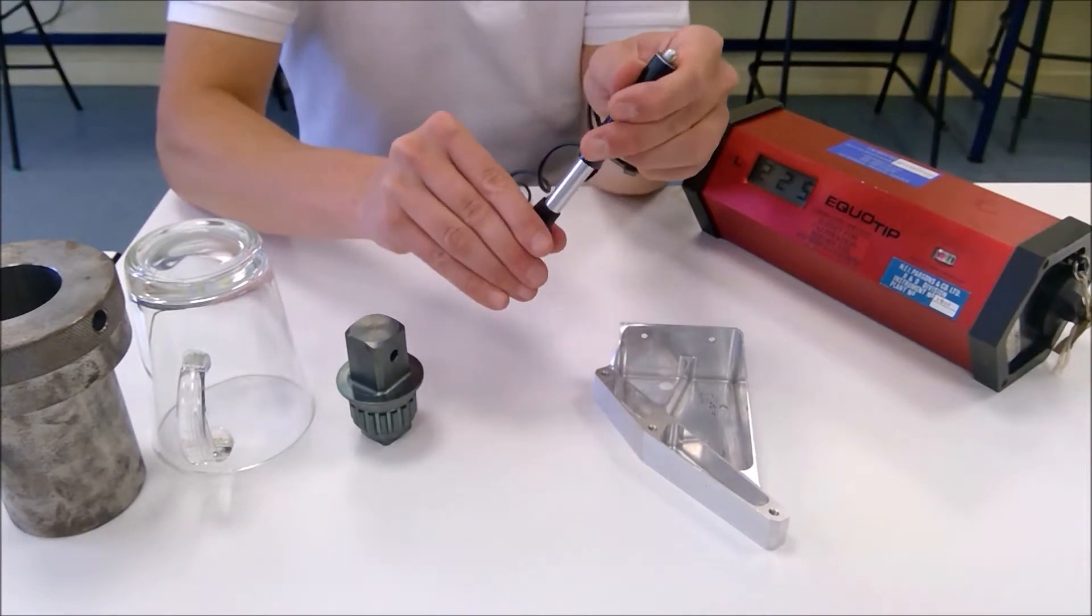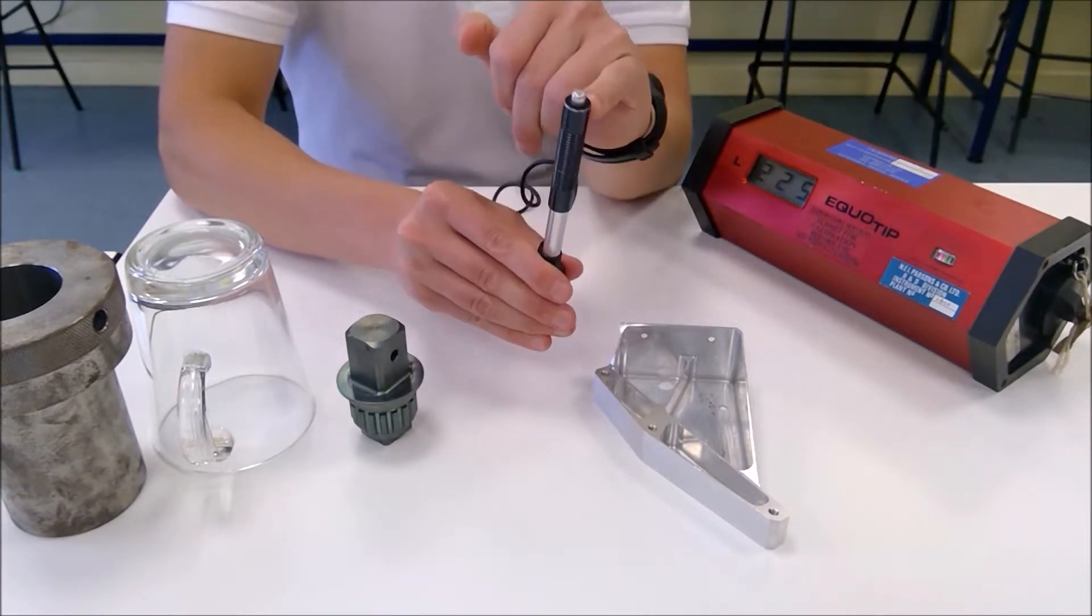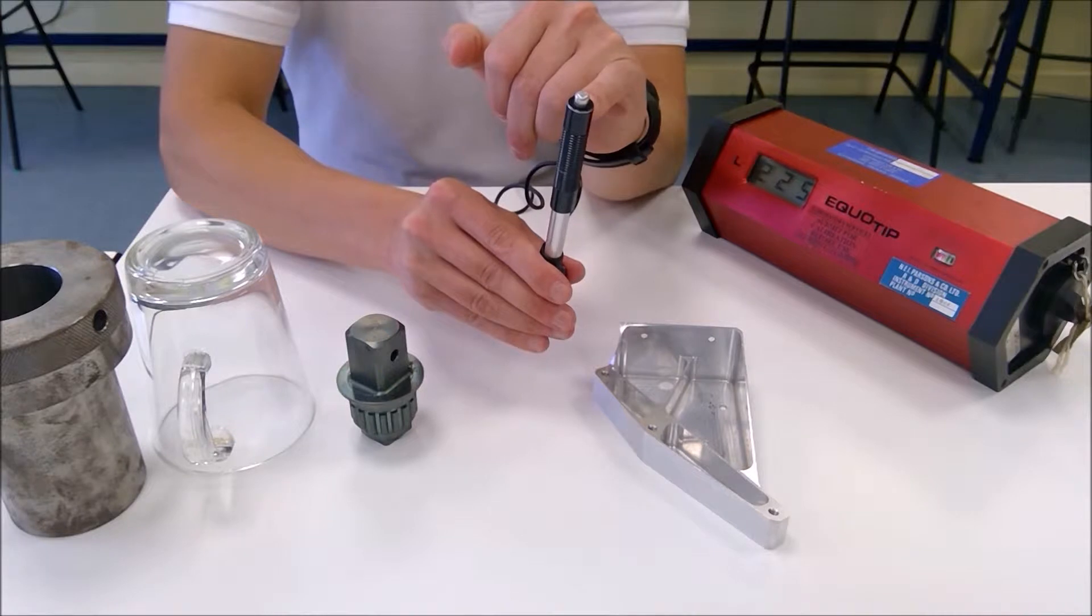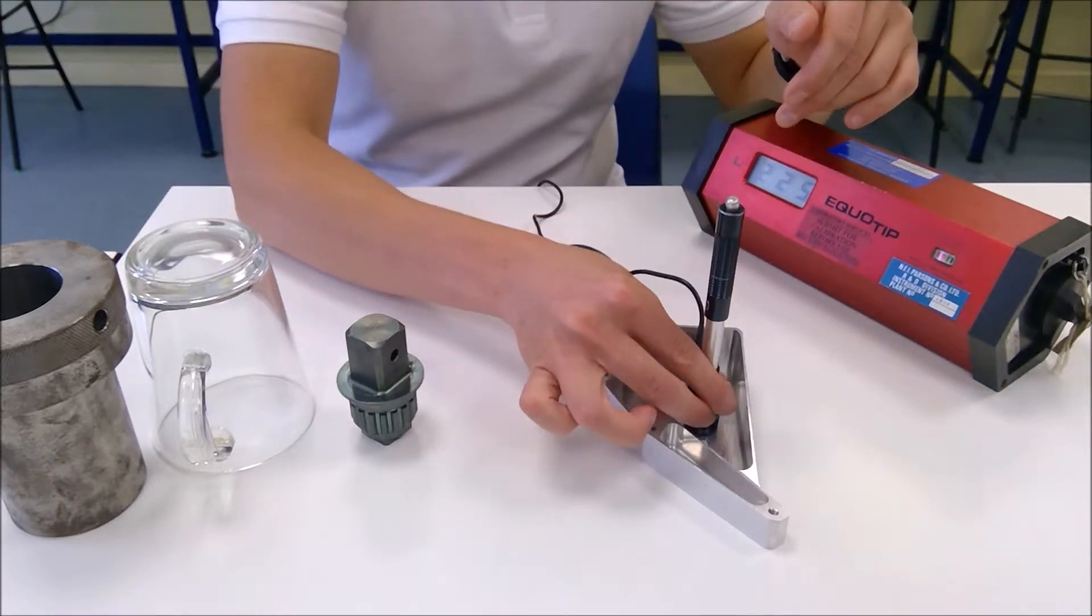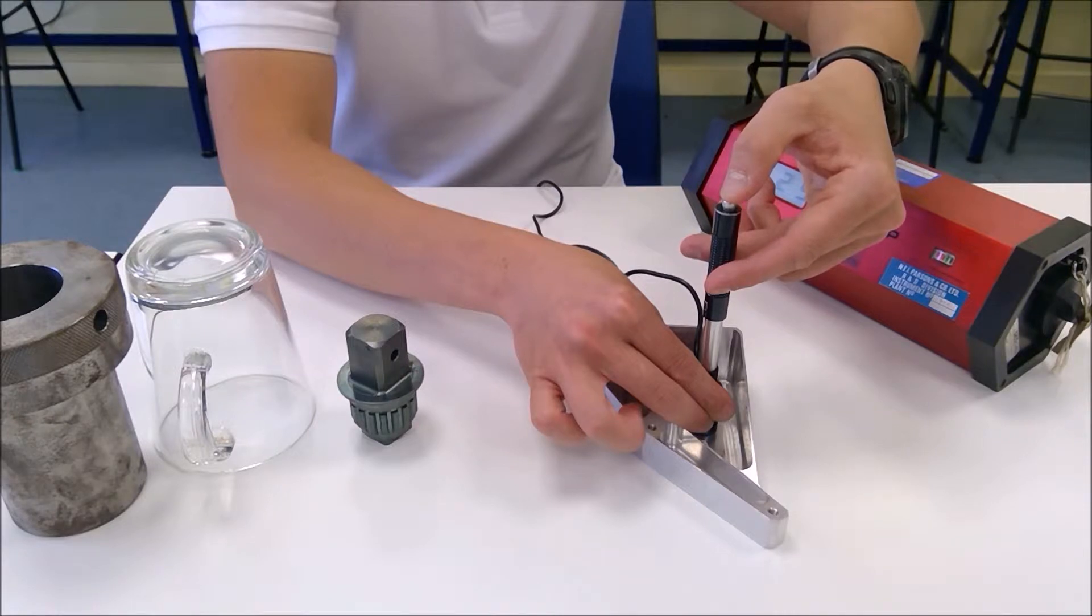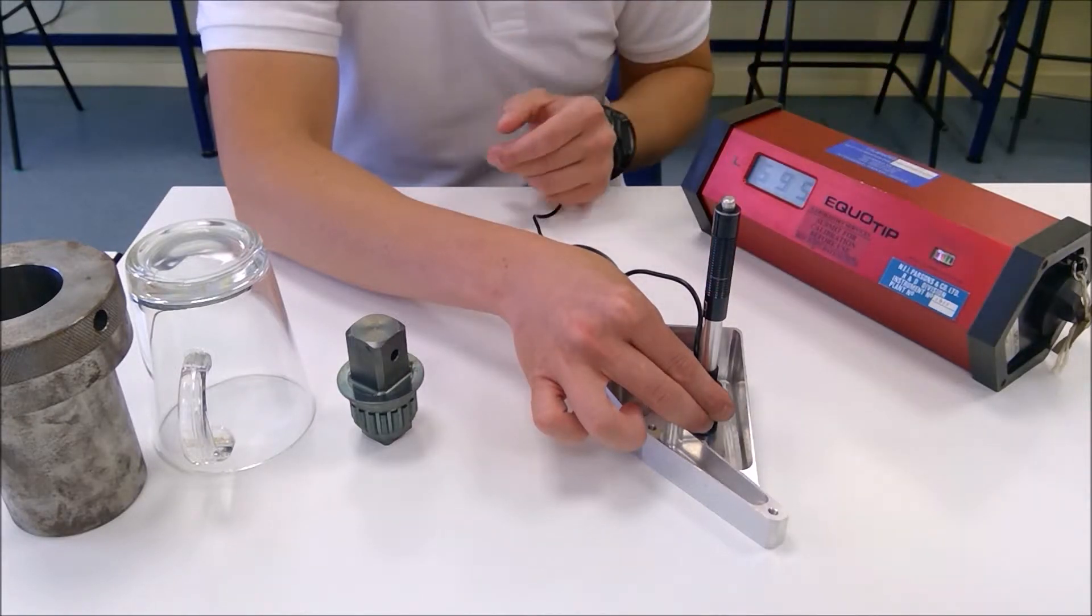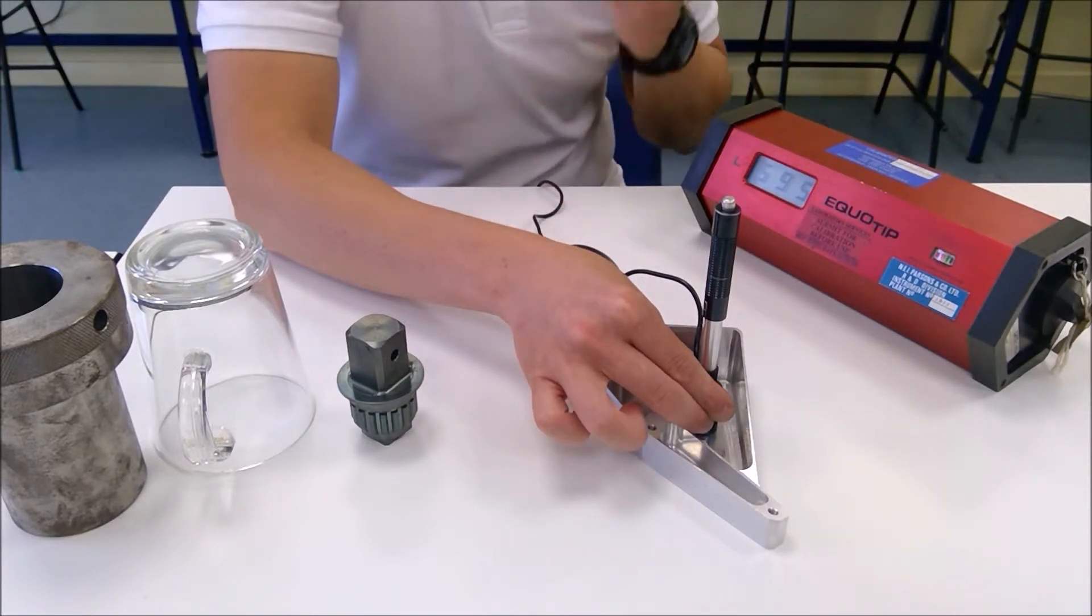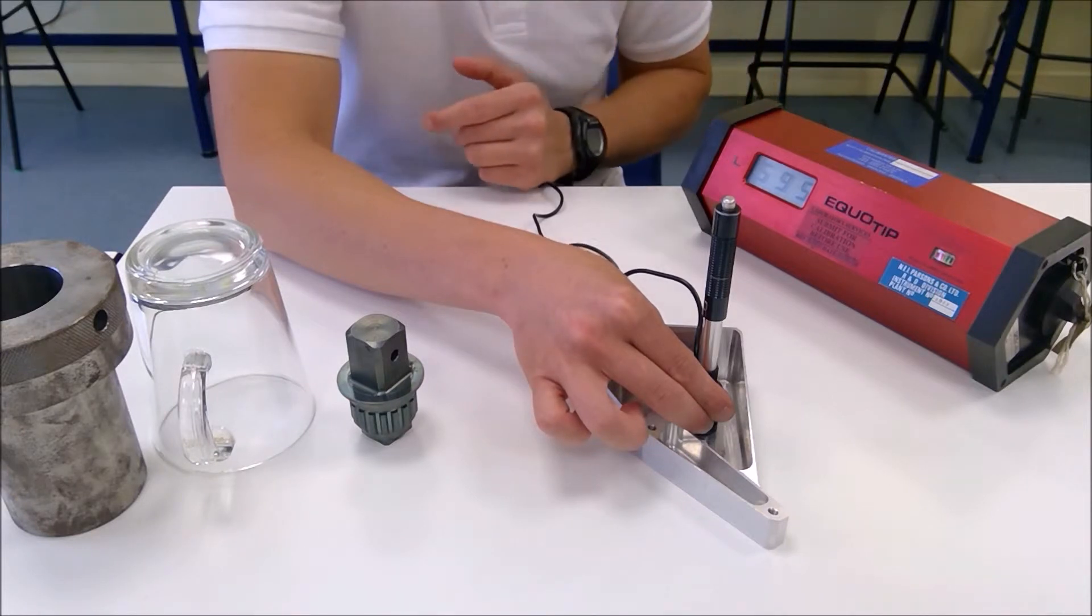So when we conduct the test we draw back the collar and that raises the pickup to the top of the probe here. We then position the probe on the surface that we're trying to measure and we press the button at the top to release the probe. You'll hear that the ball bearing strikes the surface and if you listen carefully you can actually hear it rebound.